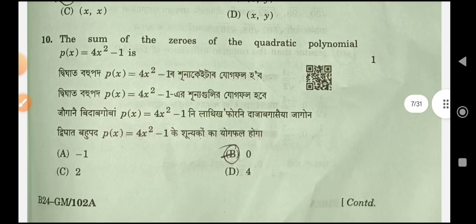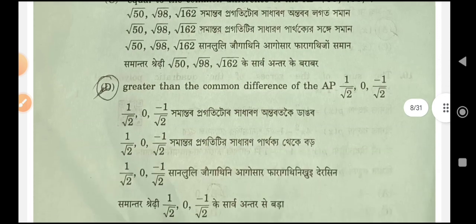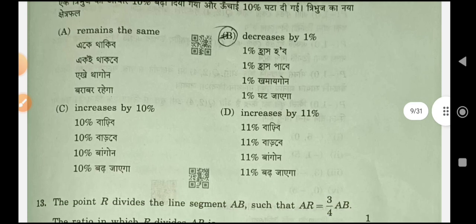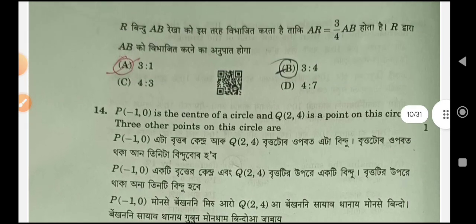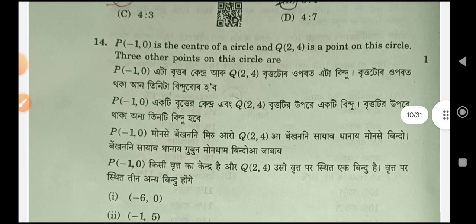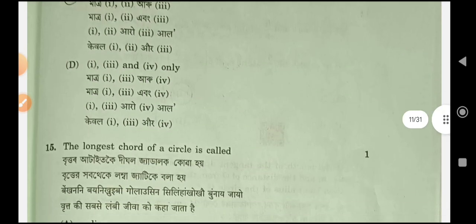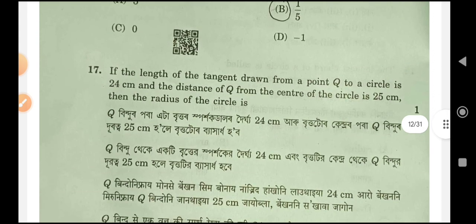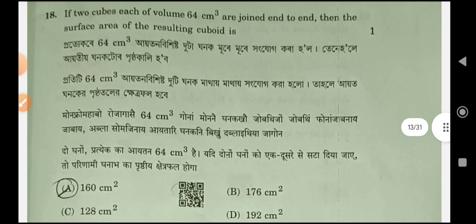Next question number 11. Next question number 12, option B. 1% decreases by 1%. Next question number 13, option A, 3 is to 1. Next question number 14, option C. Next question number 15, option C. Question number 18.